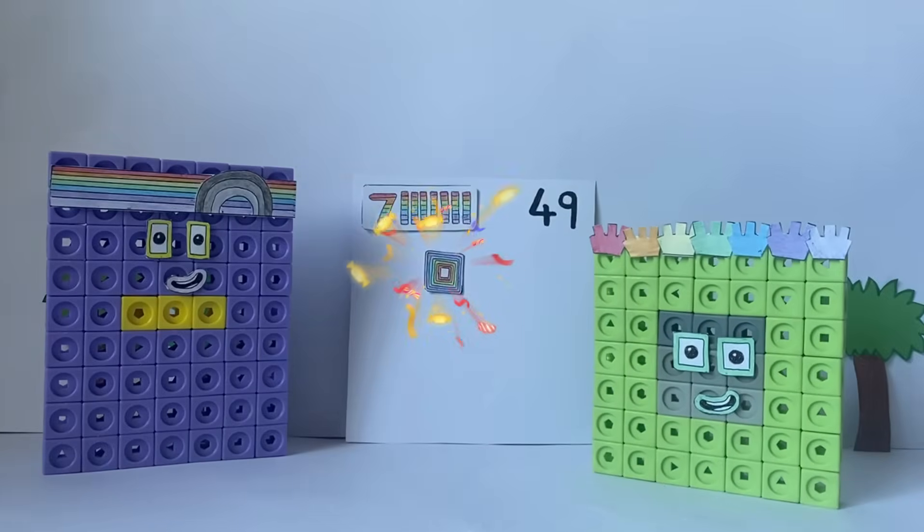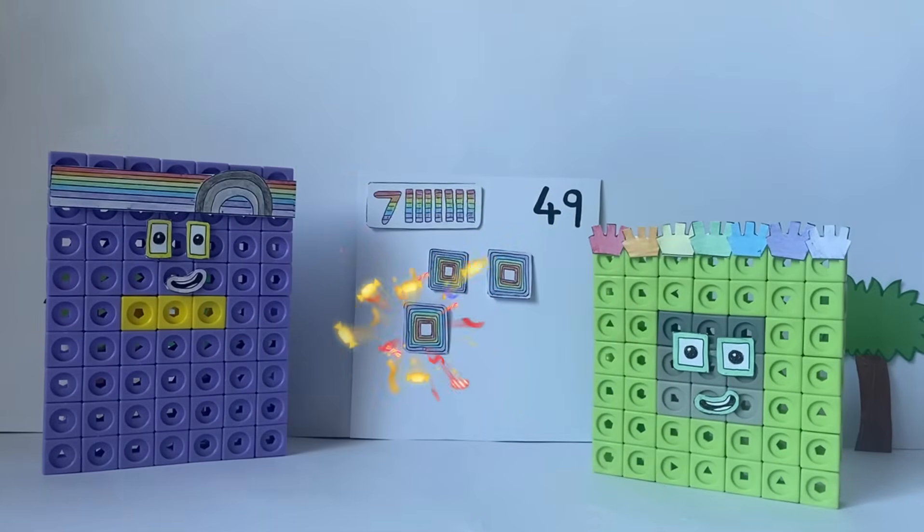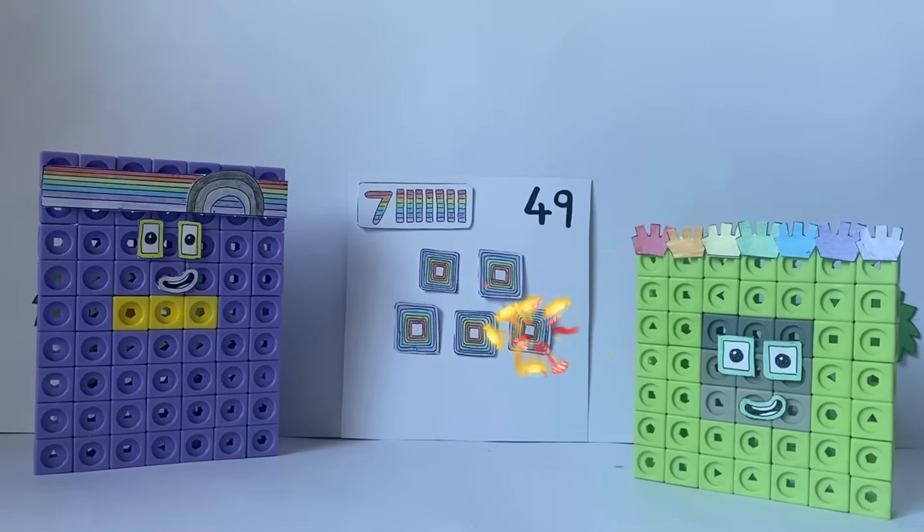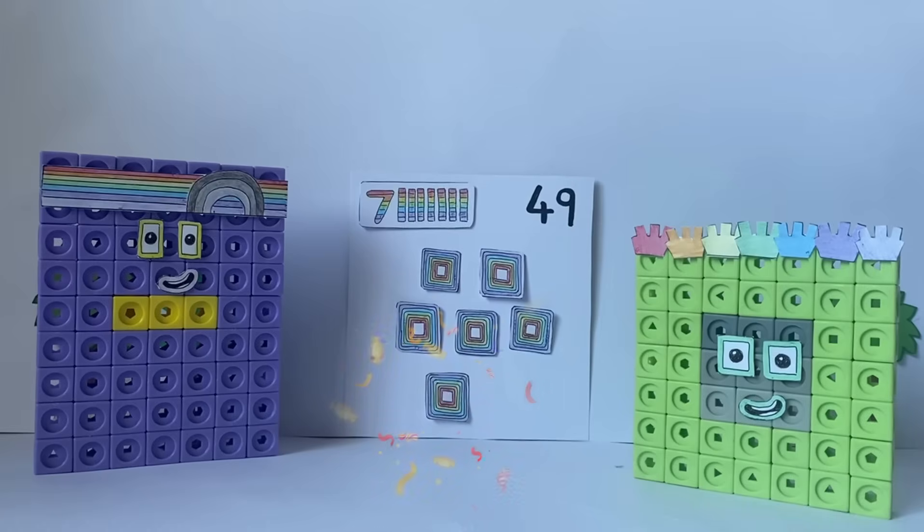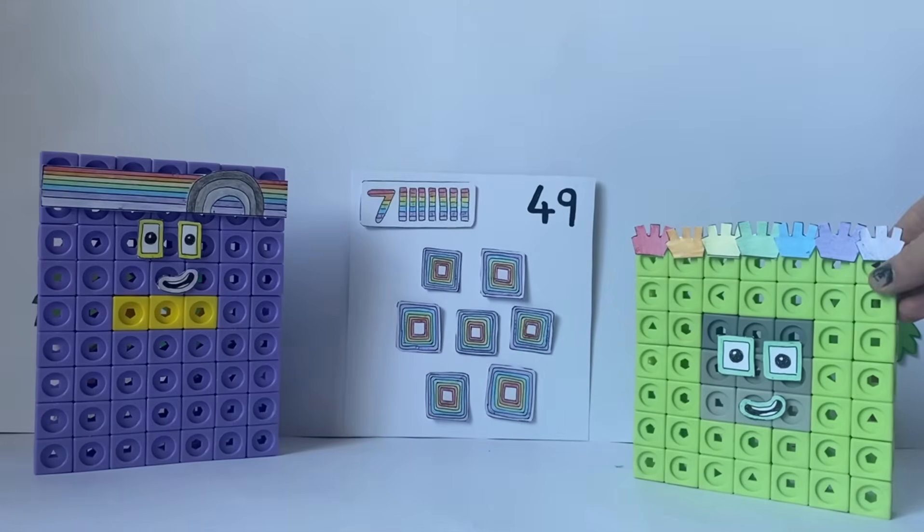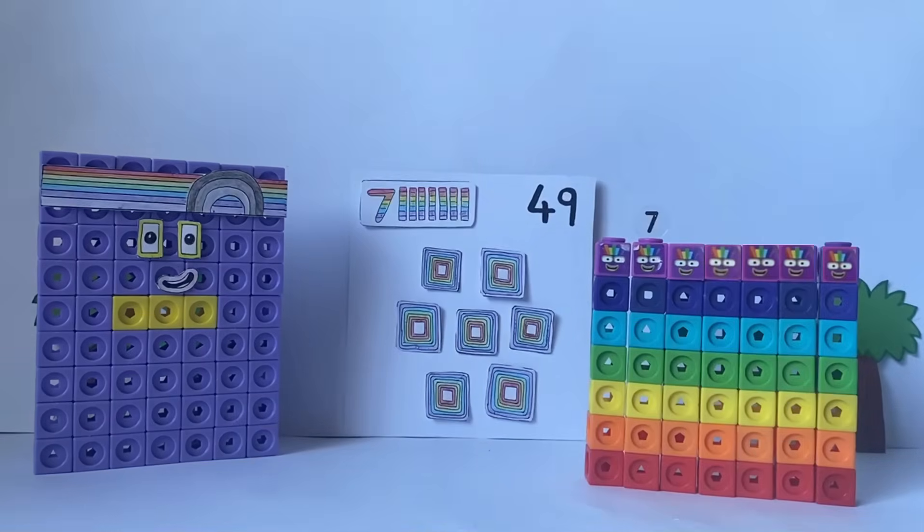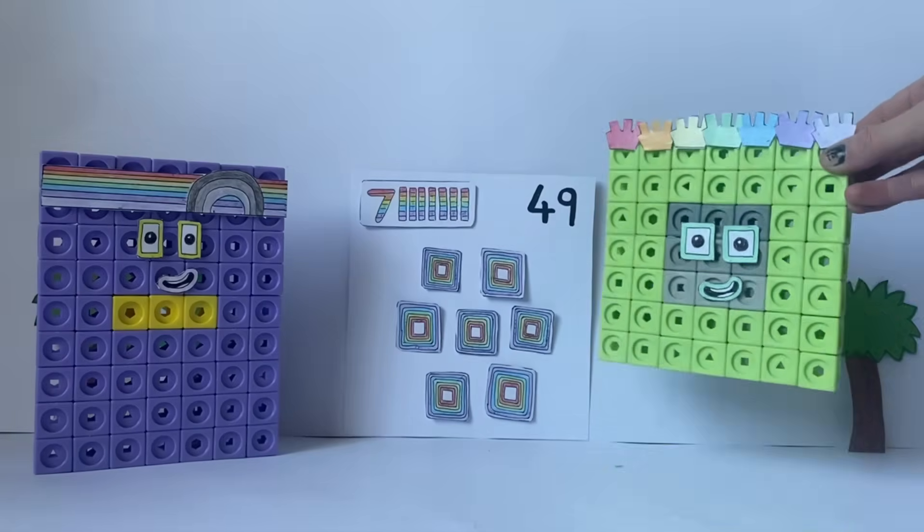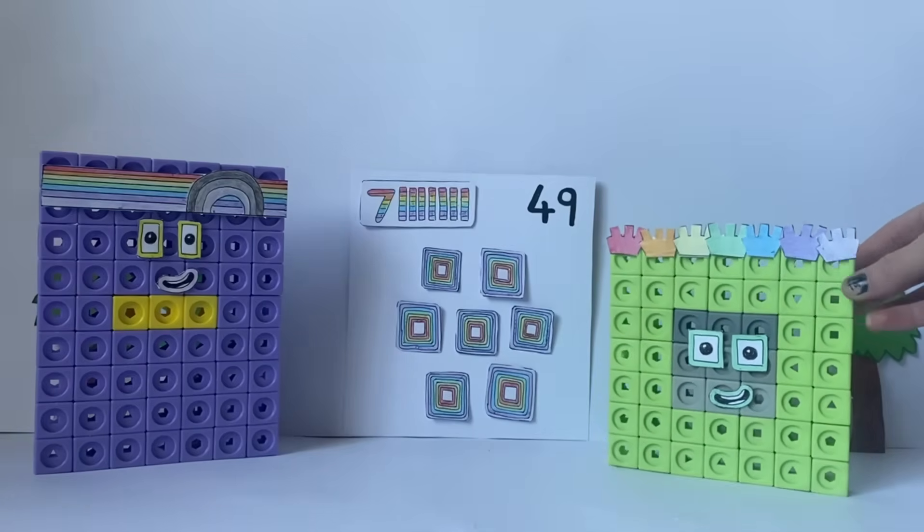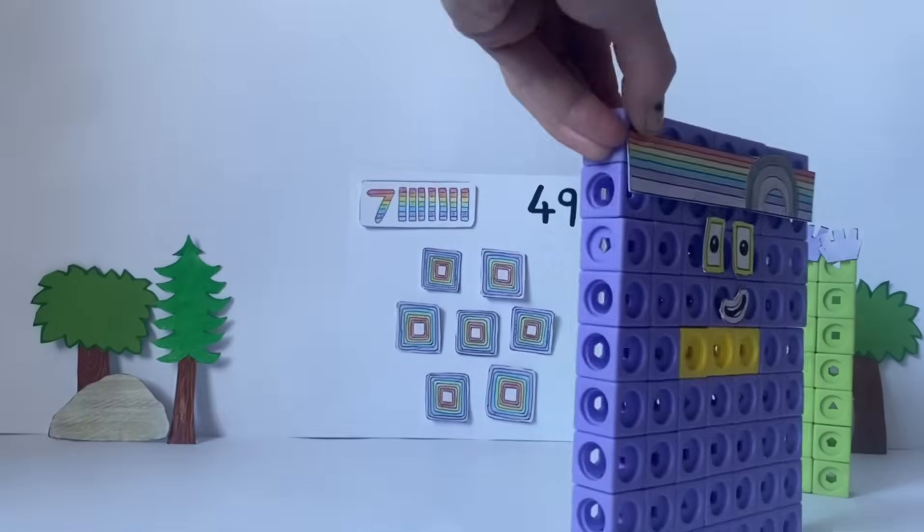One, two, three, four, five, six, seven. Seven sevens. Seven square rainbows. You see, you just need to find your true colors. Thanks, 49. I'll try.